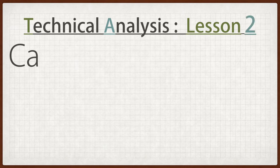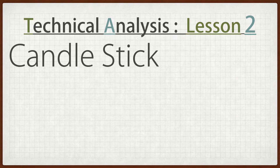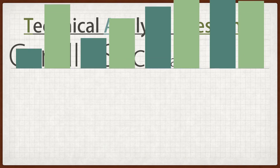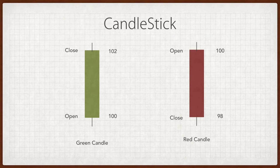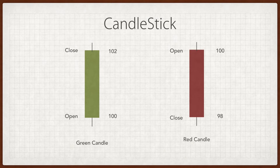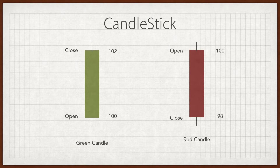Technical Analysis Lesson 2: Candlestick Basics. In the last video, we saw that in the stock charting section there were green and red bars. Today we are here to understand how to interpret these green and red bars. These green and red bars are called candlesticks.